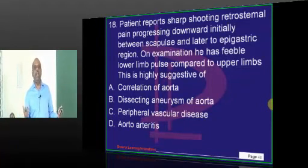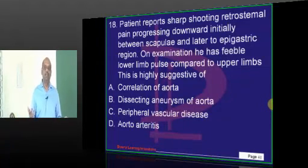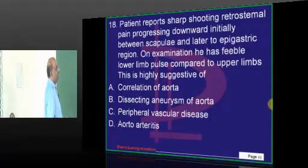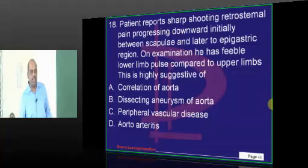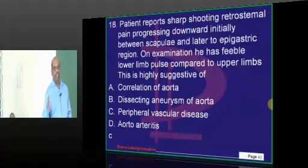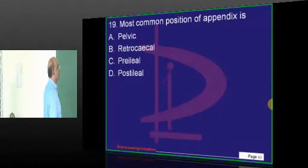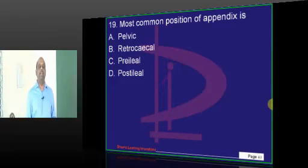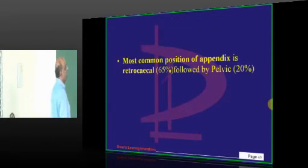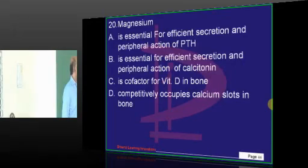Classical story: pain into the interscapular area in a patient with weak pulses is classical of dissecting aortic aneurysm — that is what you need to confidently answer. What is the most common position of the appendix? Retrocecal, without any second thought.